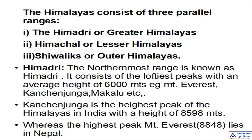The Himalayas consist of three important parallel ranges. They are: number one, Himadri; number two, Himachal; and number three, Shivaliks. Based upon height, these are also classified as greater Himalayas (Himadri), lesser Himalayas (Himachal), and outer Himalayas (Shivaliks). Now let me tell you about the Himadri, the first parallel range of the Himalayas.